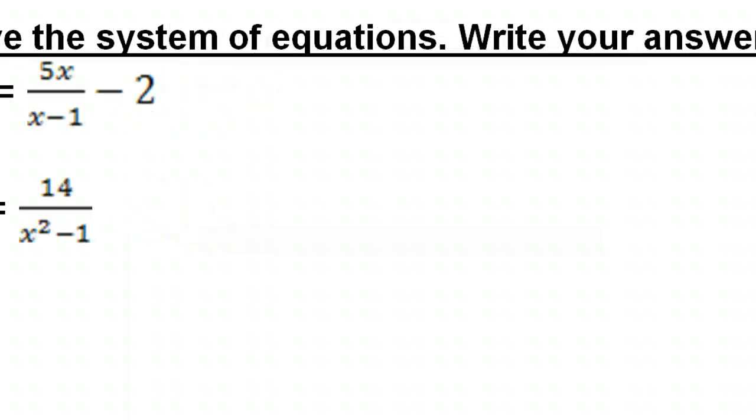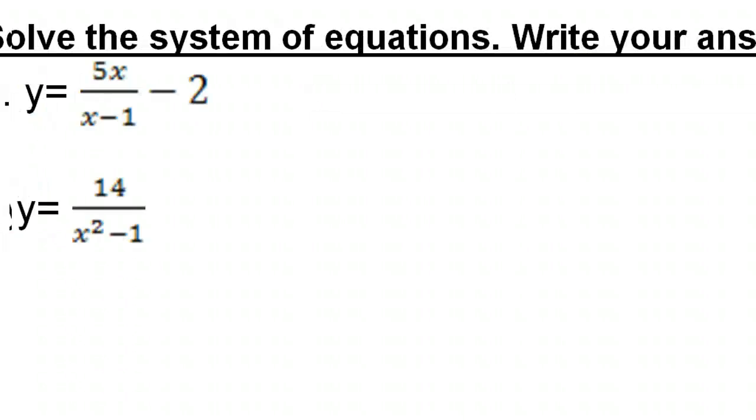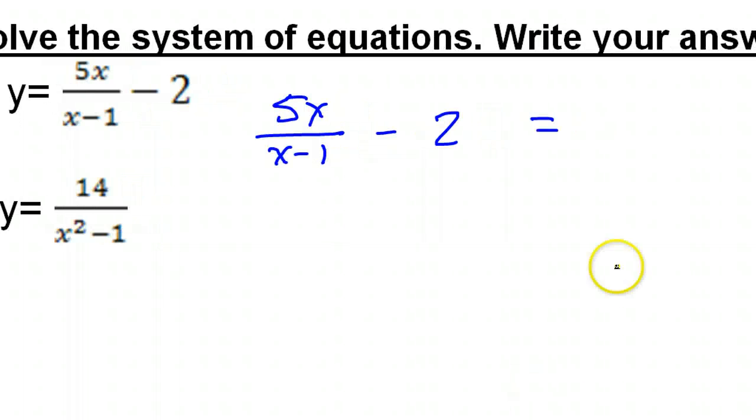Alright, we're going to solve this system of equations now. And we're going to be sure to write our answers as an ordered pair like x comma y. So, the first step though is to set these equal to each other. So, if I do that, then what I'm dealing with is I've got 5x over x minus 1 minus 2. And that's equal to 14 over. Now, I'm just going to go ahead and factor this now. x squared minus 1 is x plus 1 times x minus 1. That hopefully is jumping out at you. That's the difference of two squares.